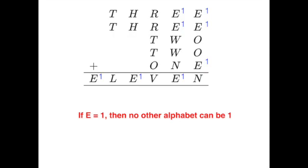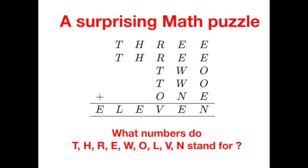The puzzle itself is surprising since the alphabet reads 3 plus 3 plus 2 plus 2 plus 1 equals 11, which we all know is true numerically. But here for the cryptogram, the word 3 actually stands for a 5-digit number, coded in the alphabets T-H-R-E-E. Our task here is to figure out what each alphabet represents. Without further ado, let's get started.